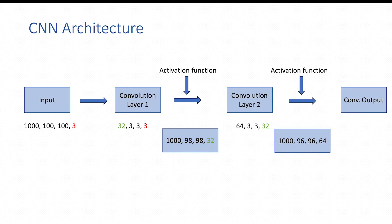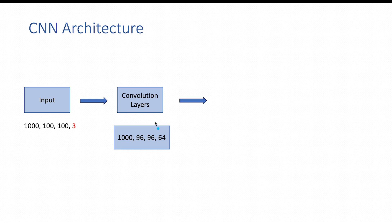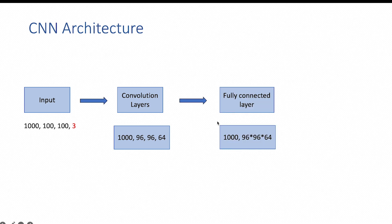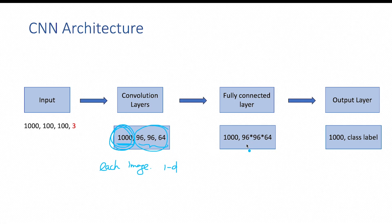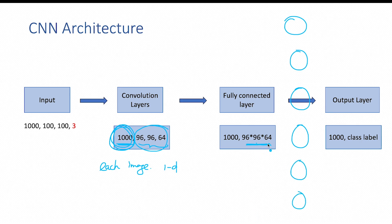The output from the convolution layers is passed to the activation function. The outputs from both convolutional layers are then passed as input to the dense network — the fully connected network. Data passed to a dense layer must be represented as a 1D tensor, so each image is flattened out. We multiply 96 by 96 by 64 to get the number of inputs. The number of inputs in the fully connected layer is 96 × 96 × 64.